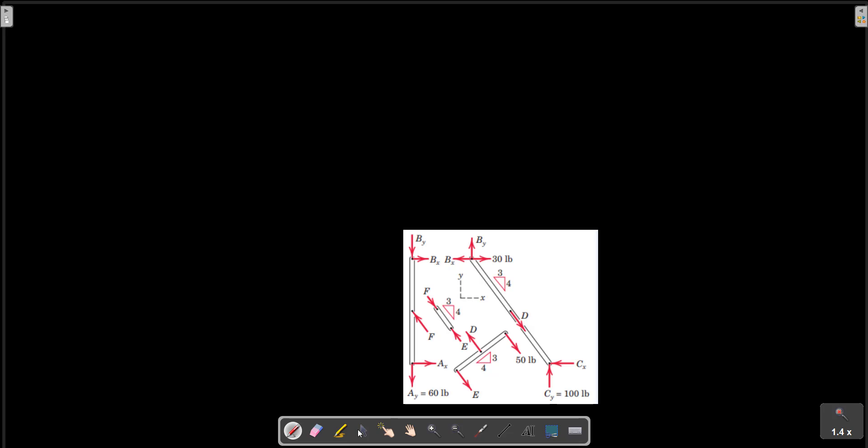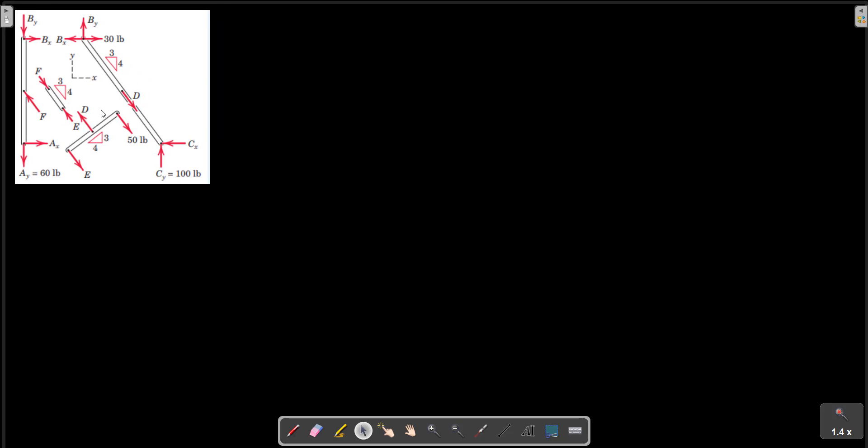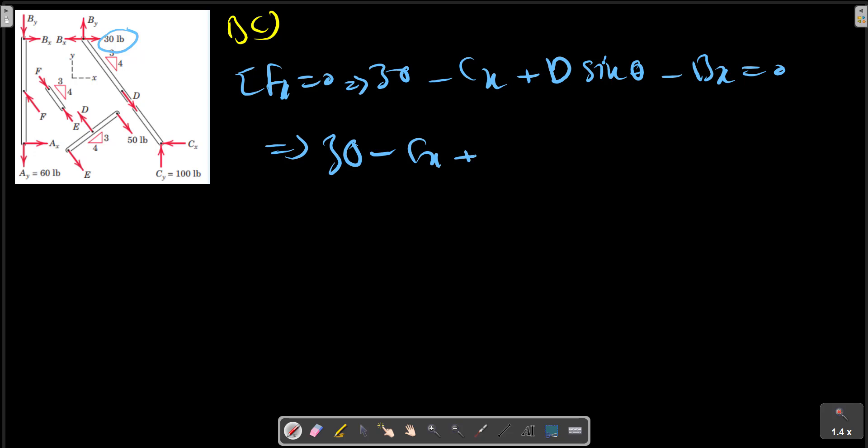The last member is BC. BC has one unknown which is Cx. Sigma Fx equals zero. 30 minus Cx plus D cos theta minus Bx equals zero. 30 minus Cx plus D, D is 100, cos 3 on 5, minus 50.